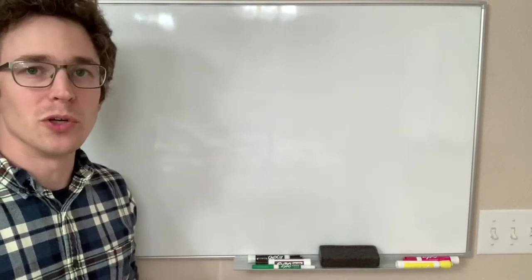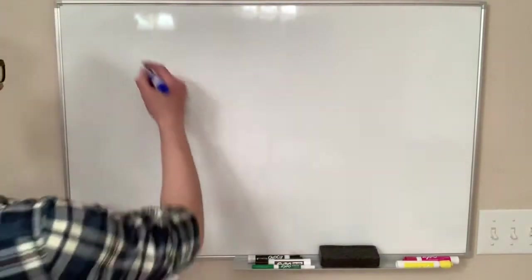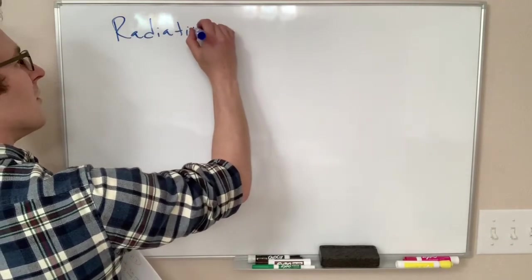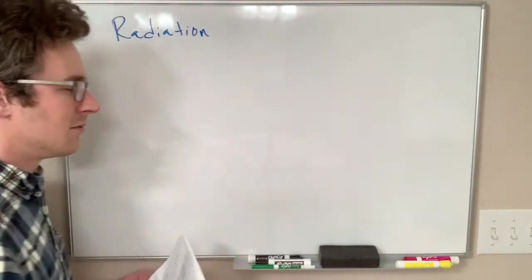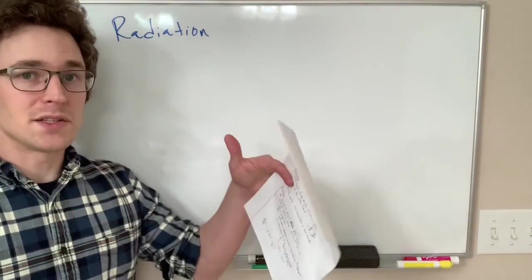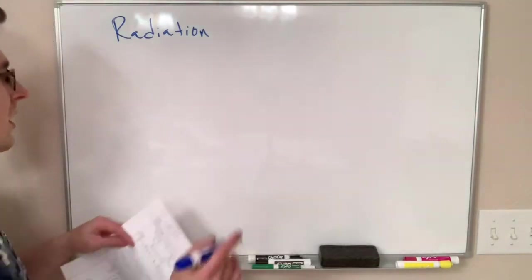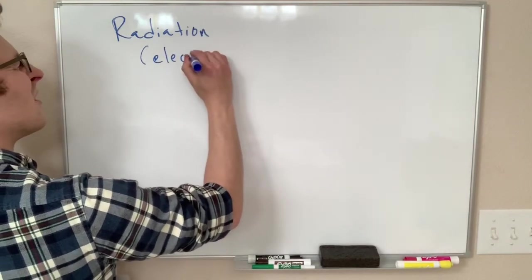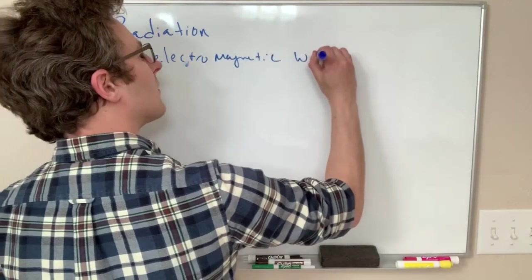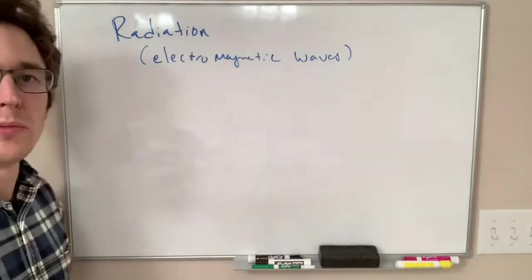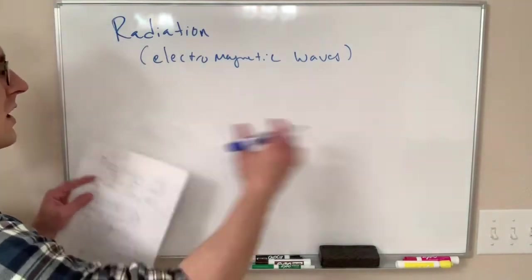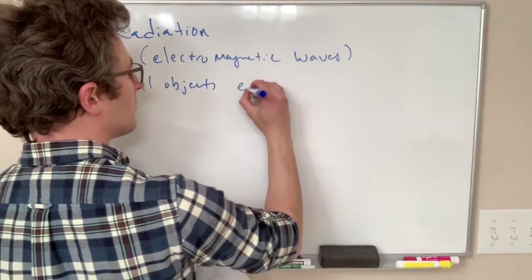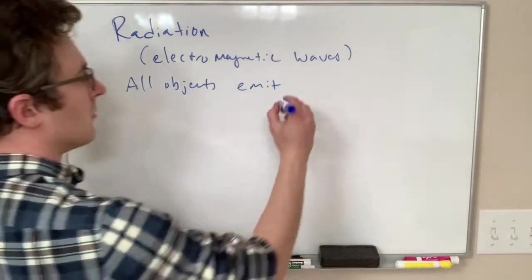All right, lastly we have radiation. So this is not ionizing radiation the way we might use it in everyday language, this just means an object radiates heat, heat goes out from it, and this is in the form of electromagnetic waves. So yes, maybe visible light, maybe radio waves, maybe infrared. This radiation could be anywhere on the spectrum. All objects emit this radiation.